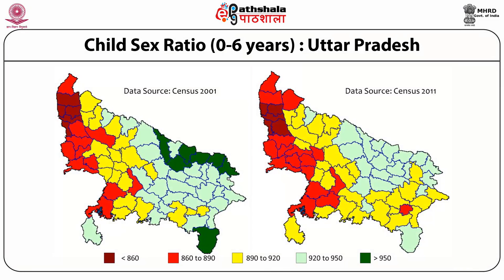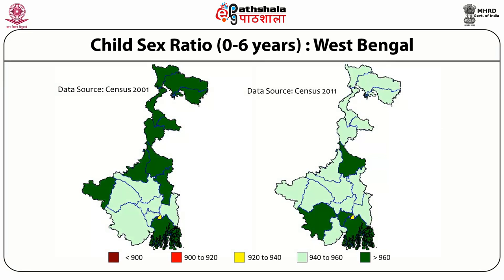Looking at the state of Uttar Pradesh — almost like a continent, the most populous state of the country — stretching from the borders of Uttarakhand, Punjab, Haryana, all the way to eastern India bordering Jharkhand and Bihar. Of more than 80 districts, in 2001 it was the westernmost districts which were affected. In 2011 we see the spread towards central and eastern UP, including urban centres like Allahabad and Varanasi.